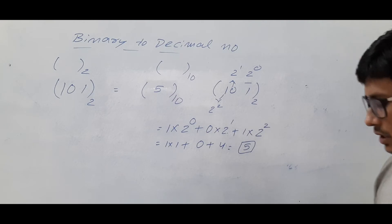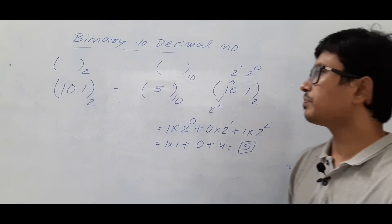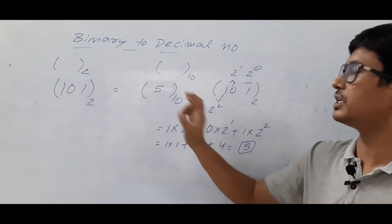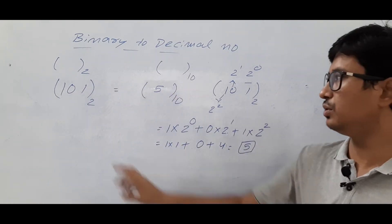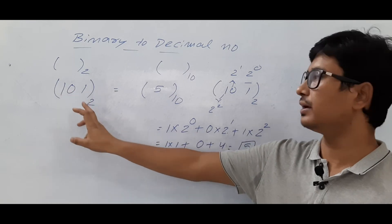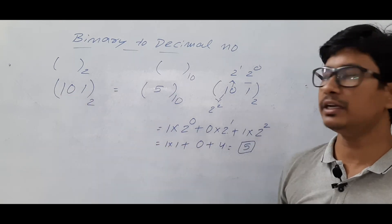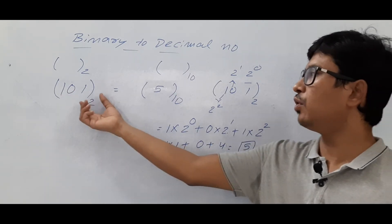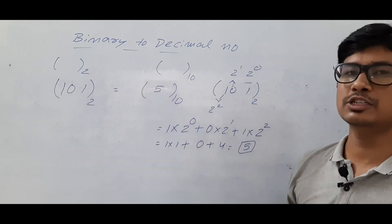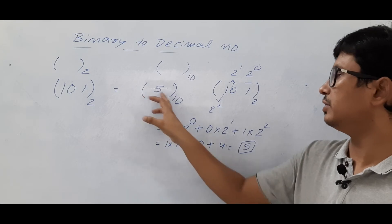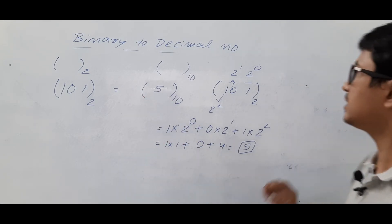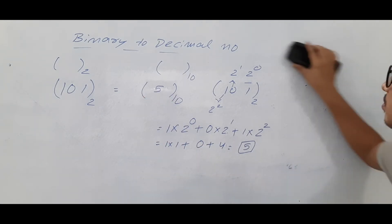So 5 base 10 is the equivalent decimal number for the binary number 101. We have successfully converted a binary number to a decimal number. Let me now discuss another example.